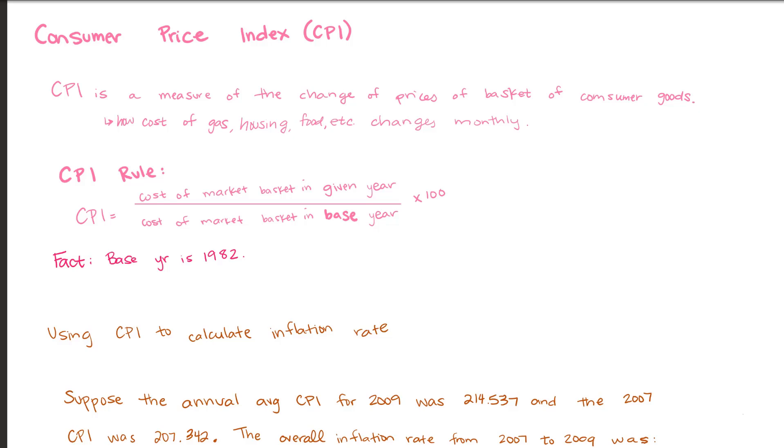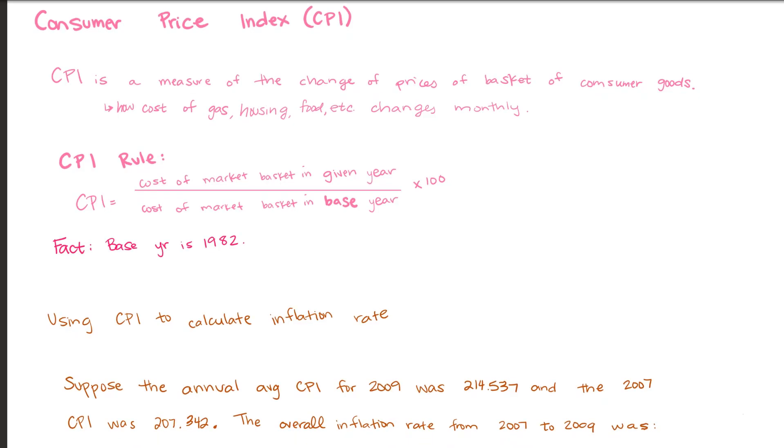So again, this index is measuring a change and we can see this change, this rate in this formula. Now just the fact, the Bureau of Labor Statistics uses the base year of 1982 to calculate the CPI. And for those of you going into government, maybe we can update this year because you know, things have changed.